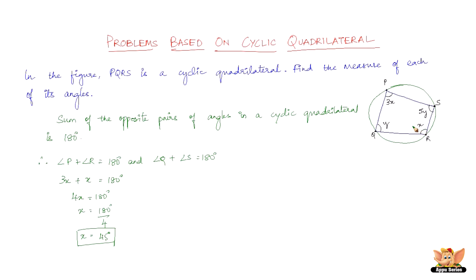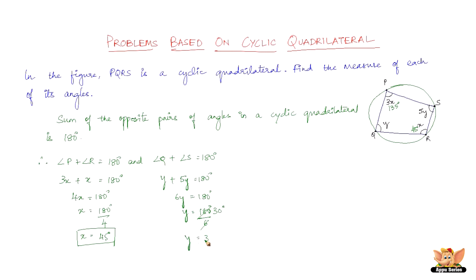We found angle R to be 45 degrees, and 3x is 135 degrees. Now for angle Q and angle S: angle Q equals y and angle S equals 5y, so y plus 5y equals 180 degrees. 6y equals 180 degrees, so y equals 30 degrees.